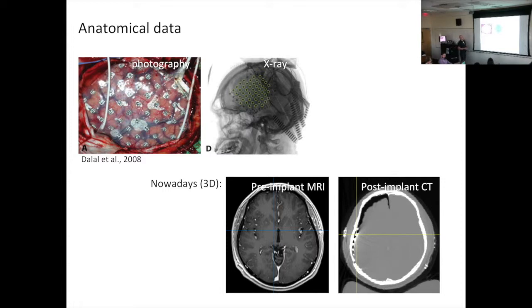So what are the anatomical data that we can expect to work with? In the past, what you would see is surgical photos or x-rays. What we'll see nowadays is three-dimensional images, mainly MRI and CT. MRI is usually made to detect or identify any structural abnormalities. And it's also useful for guiding the surgical implantation when the decision is made to actually implant electrodes. Then there's the CT, post-implant CT, which is made after implantation. And it basically shows high-intensity objects in the scan, including the skull and the electrodes.